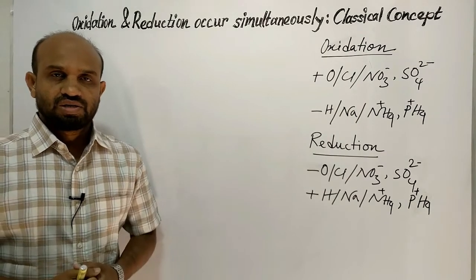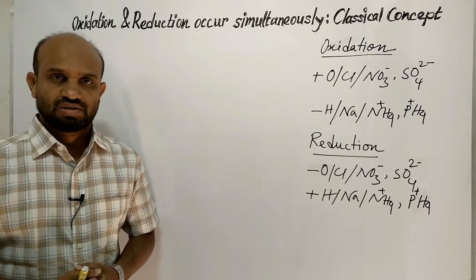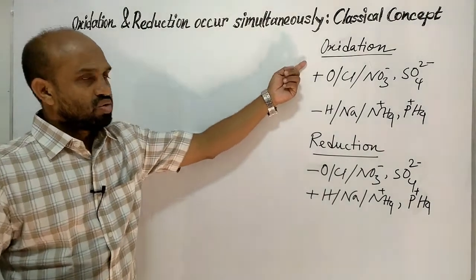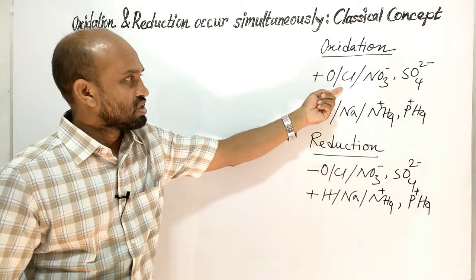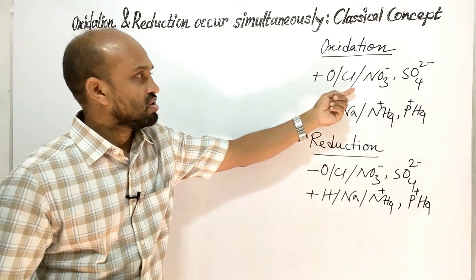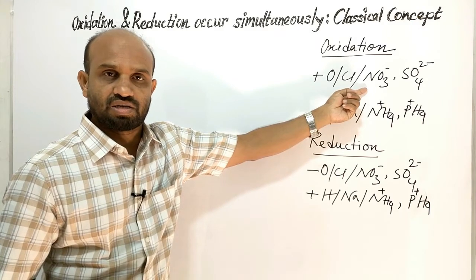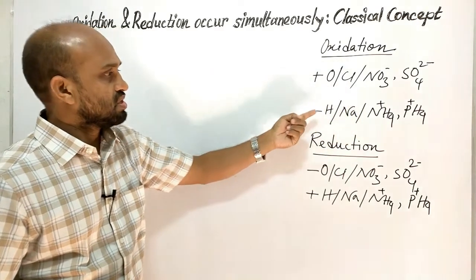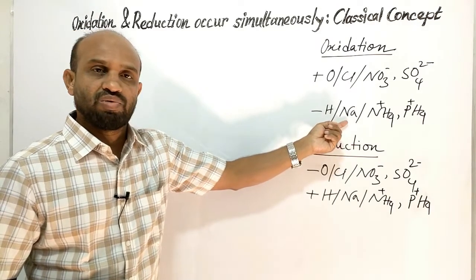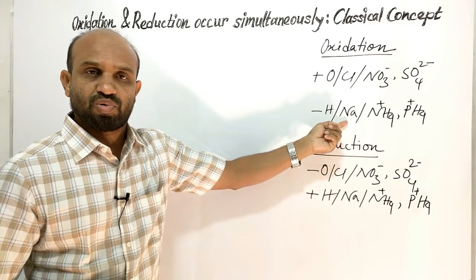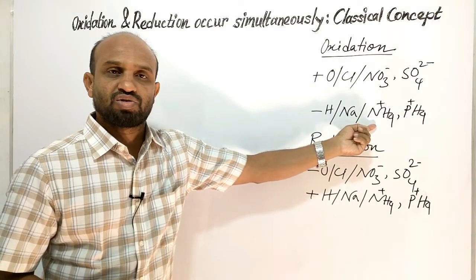Firstly, let's see what is oxidation and what is reduction. Oxidation is the addition of oxygen, or an electronegative element, or an electronegative radical like nitrate, sulfate, etc., or the removal of hydrogen, or the removal of an electropositive element or electropositive radical.